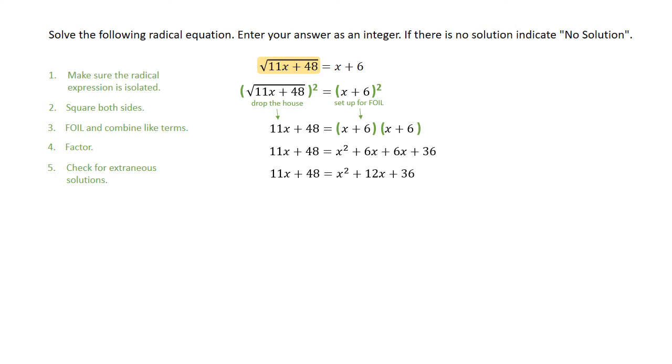It will help us to collect our like terms all on the right-hand side of this equation, because the x squared is already over there. So we're going to subtract the 11x and subtract the 48 to get the terms to the right-hand side of this equation, and effectively zero out the left-hand side of this equation.